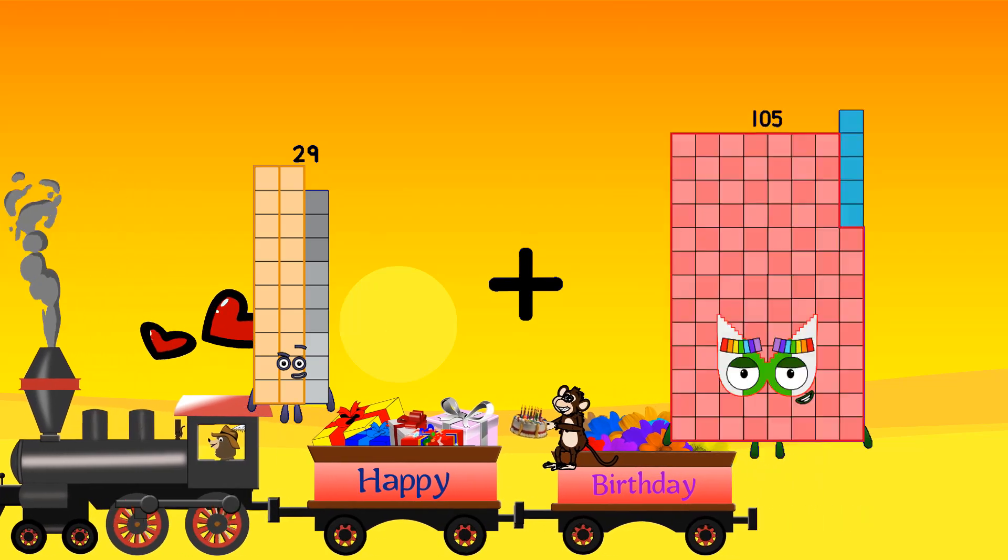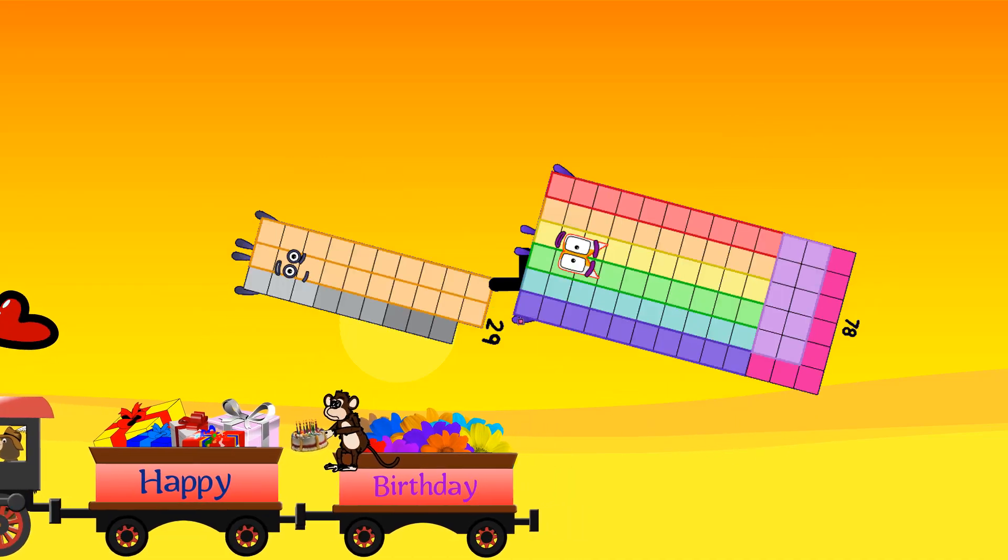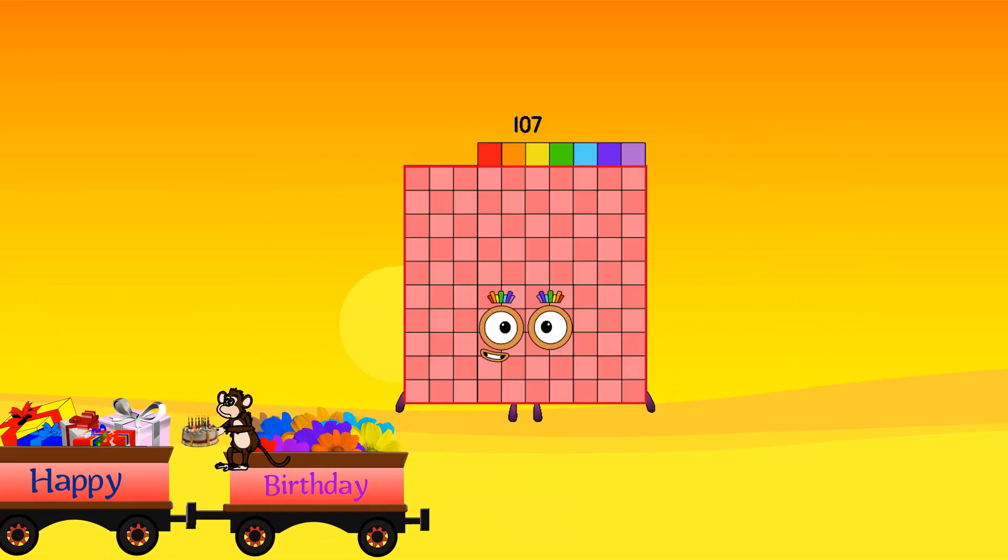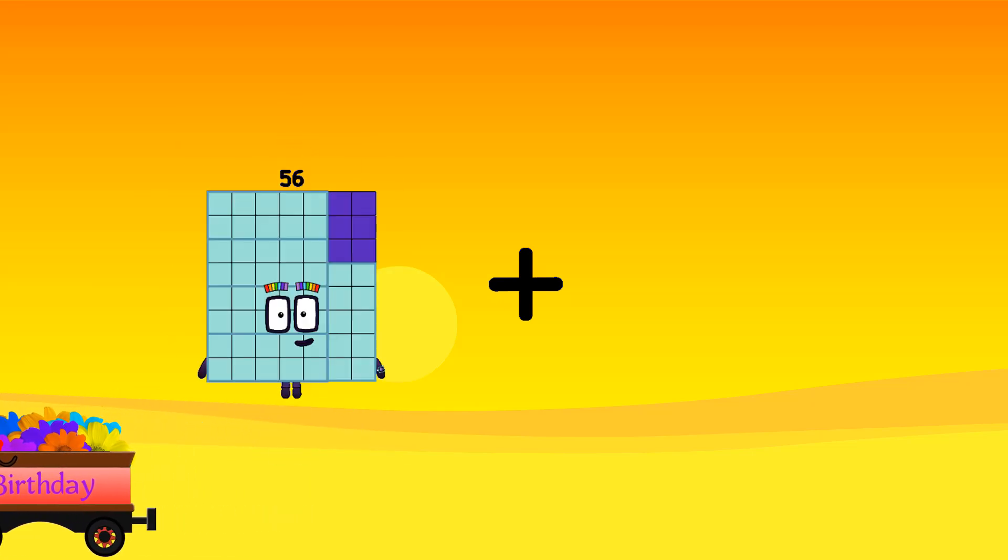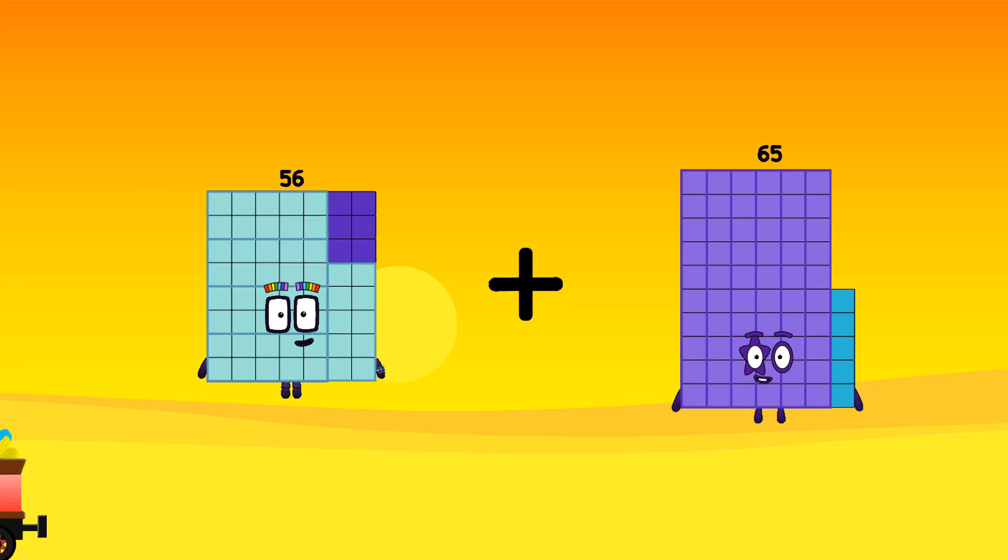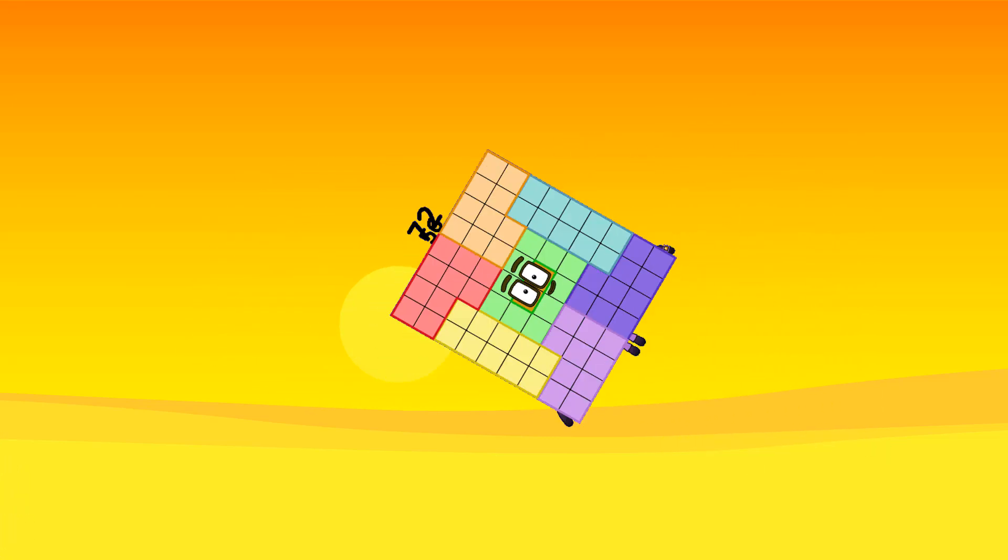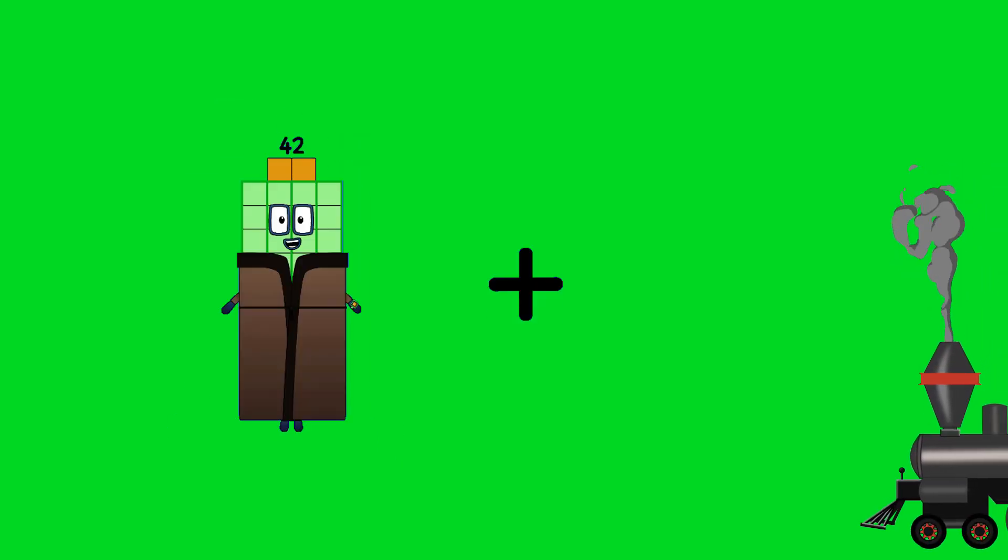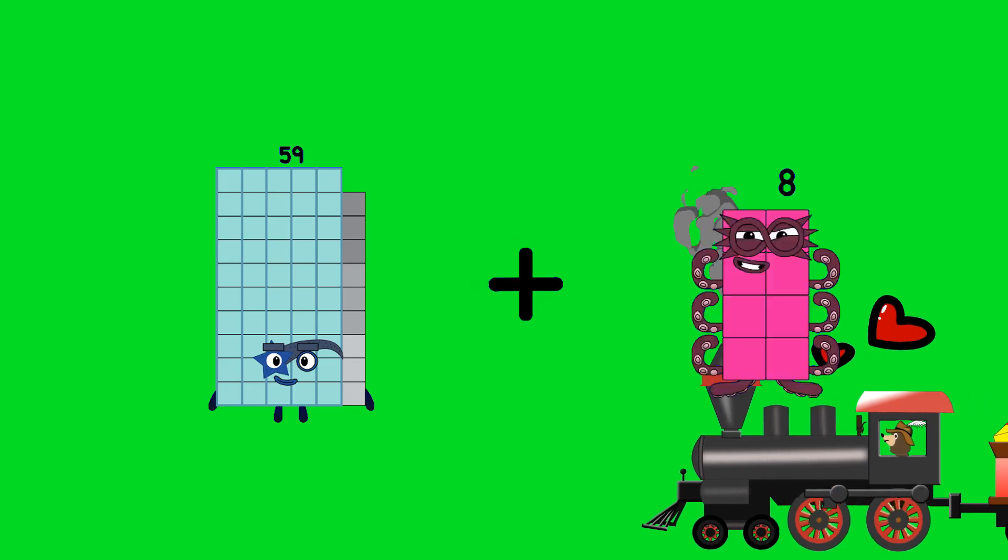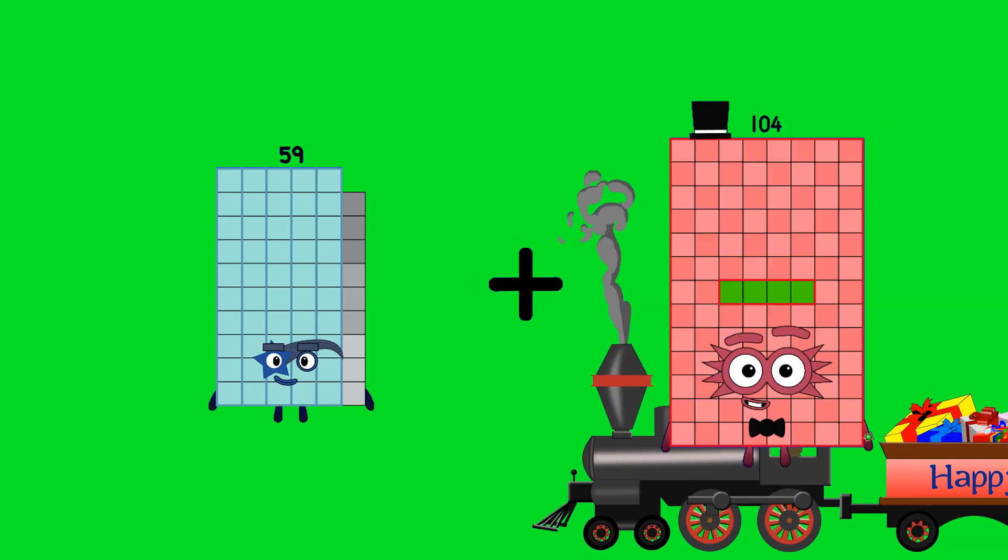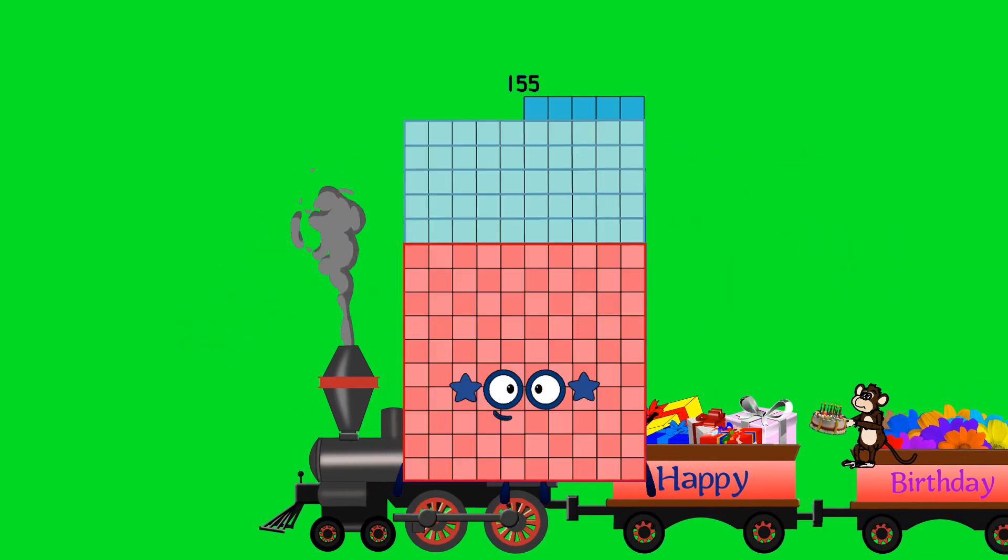29 plus 78 equals 107. 56 plus 72 equals 128. 59 plus 96 equals 155.